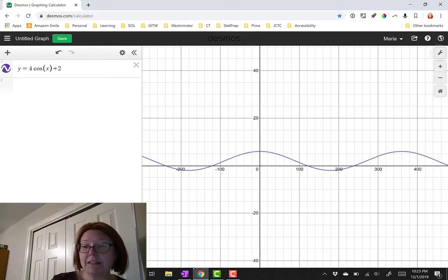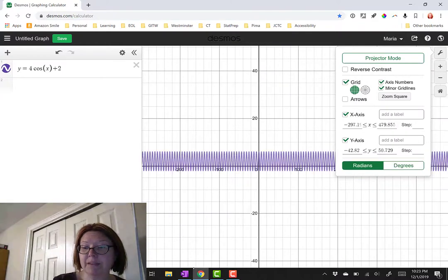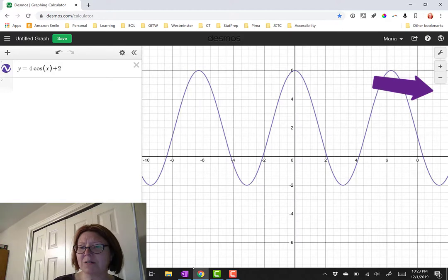So I'm going to go back into the wrench menu and switch to radians and click on the home button to move back to a window that's a little bit easier to view in.